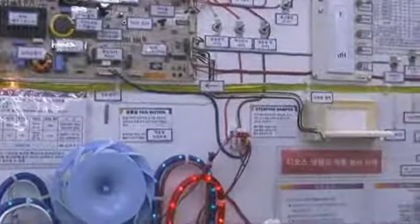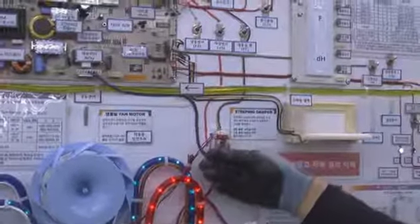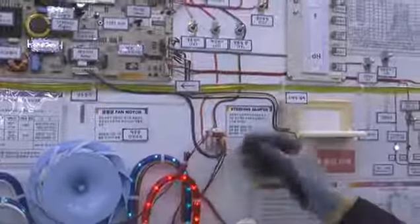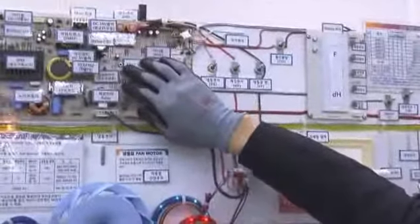Defrost forcing jig is used to check the defrost voltage output from the main PCB. Connect the jig and press test on main PCB.